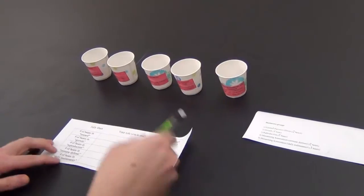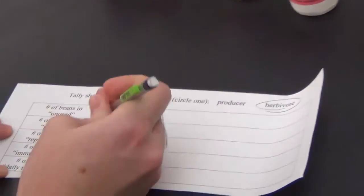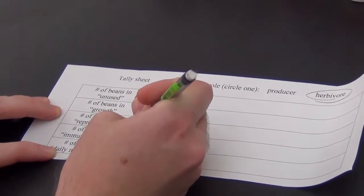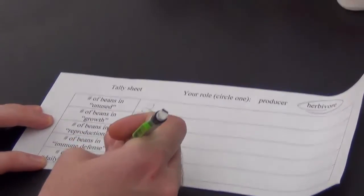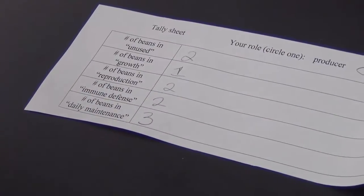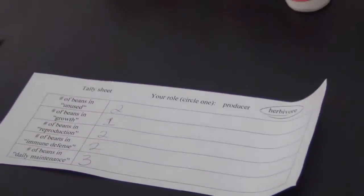And when you get 10 beans in your growth cup, you're going to raise your hand because your teachers are going to represent the carnivores at the next trophic level who will eat your growth once you have a chance to grow enough. And that's the game basically.